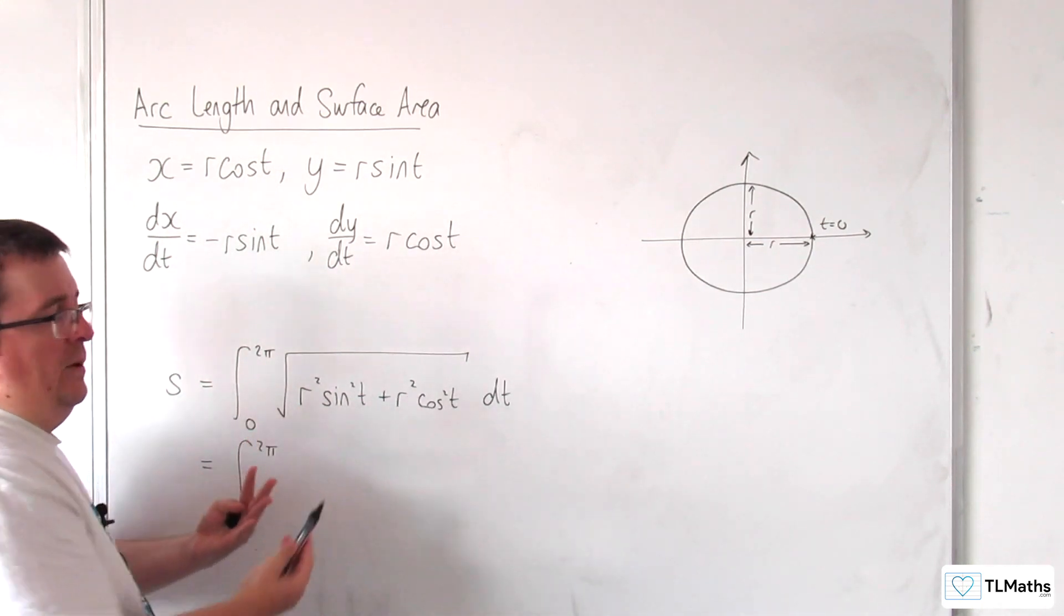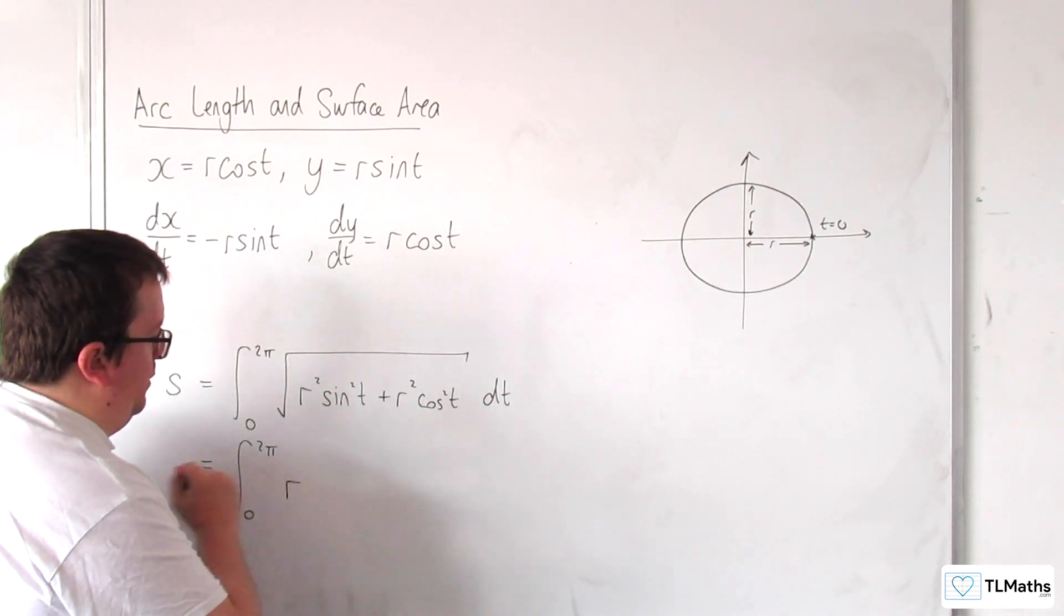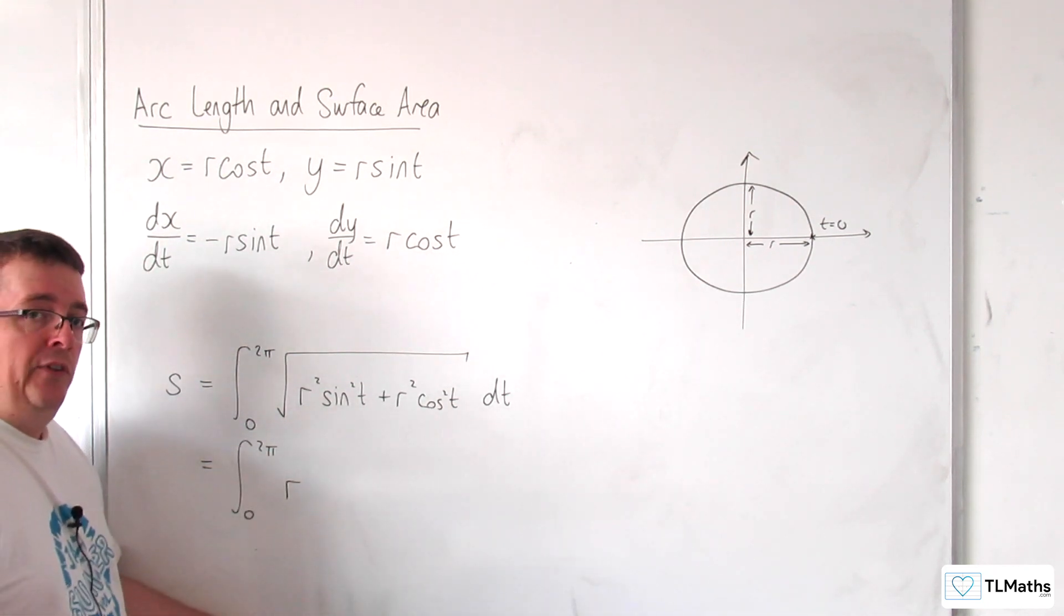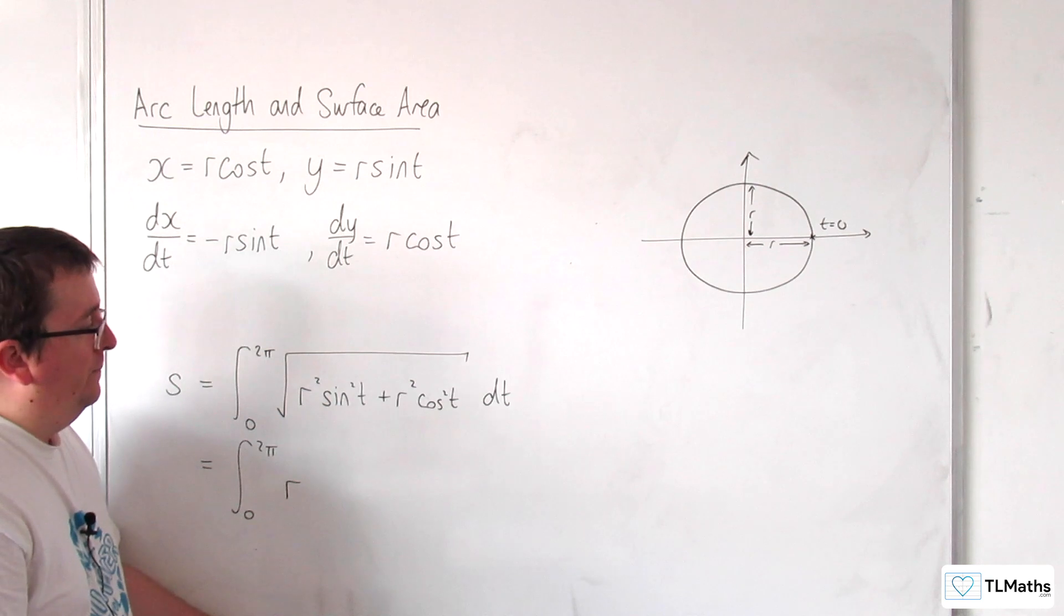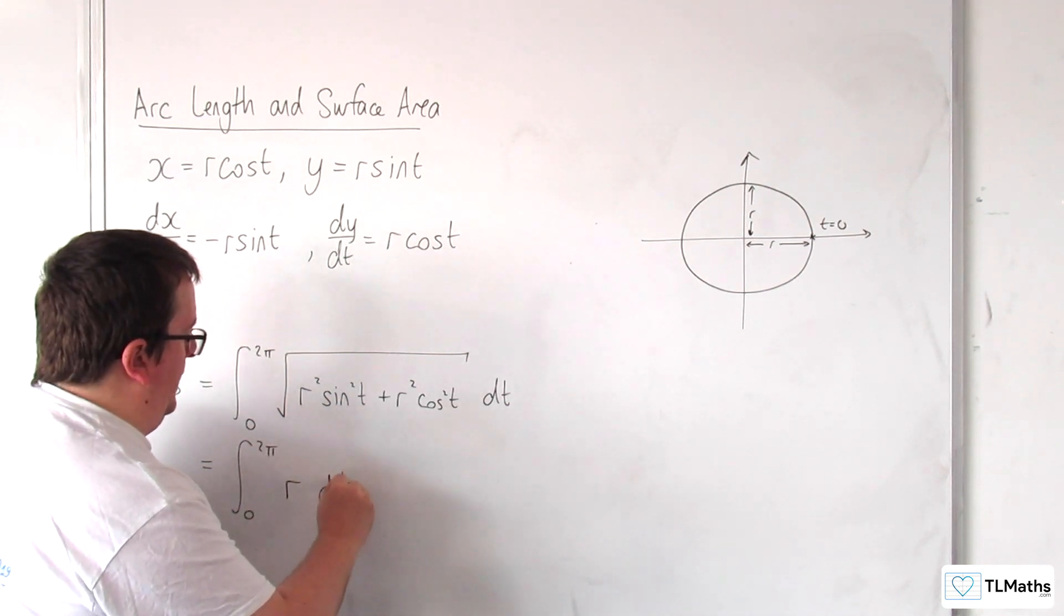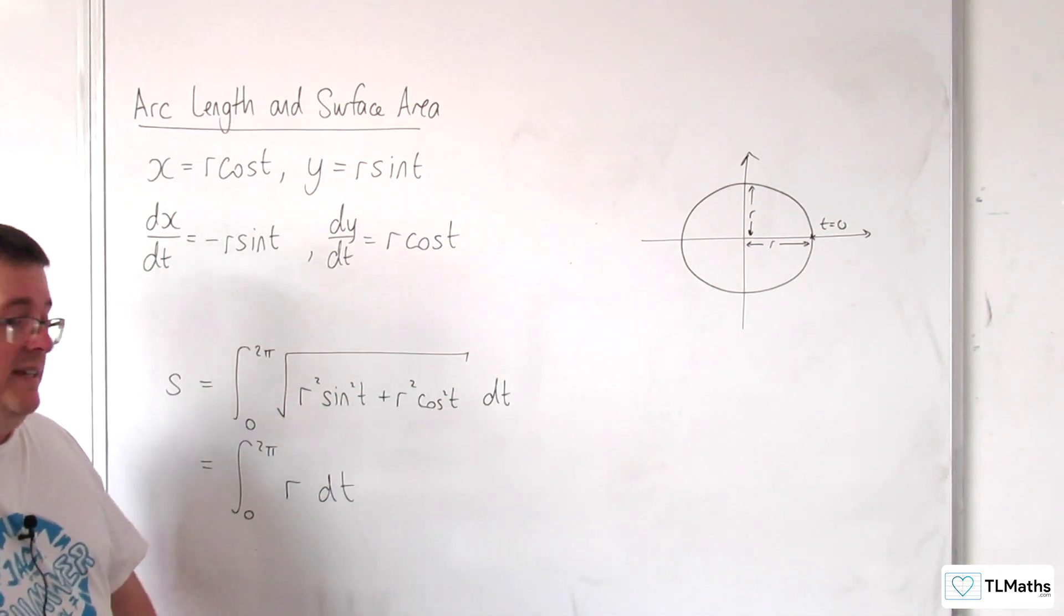So what we can do is we can factor out the r squared here outside of the square root, and that would just leave me with r. And inside I would be left with sine squared plus cosine squared, which is just 1. And then the square root of that, just 1. So actually, this is just going to simplify to the integral between 0 and 2π of r dt.